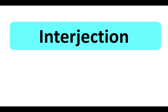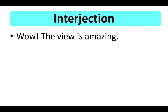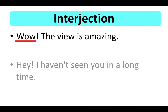An interjection is used to express strong emotion and is often followed by an exclamation mark. For example: wow, or oh. 'Wow! The view is amazing' — the interjection in this sentence is 'wow.' 'Hey! I haven't seen you in a long time' — the interjection in this sentence is 'hey.'